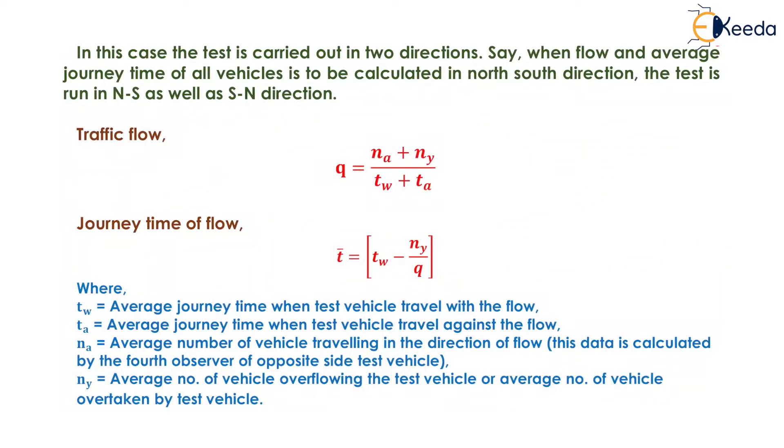In this case, the test is carried out in two directions. Say when flow and average journey time of all vehicle is to be calculated in north-south direction, the test is run in north-south as well as south-north direction.